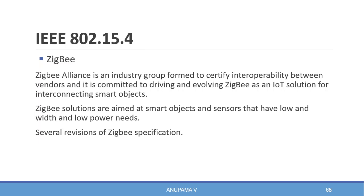The ZigBee Alliance is an industry group that certifies interoperability between vendors and is committed to driving and evolving ZigBee as an IoT solution for interconnecting smart objects. ZigBee solutions are mainly used for smart objects and sensors that have low bandwidth and low power needs. ZigBee compliant and certified devices should interoperate even across different vendors.